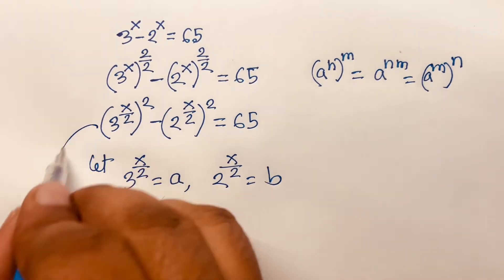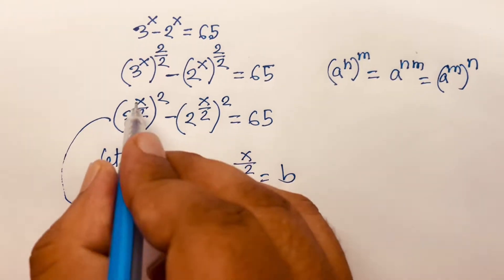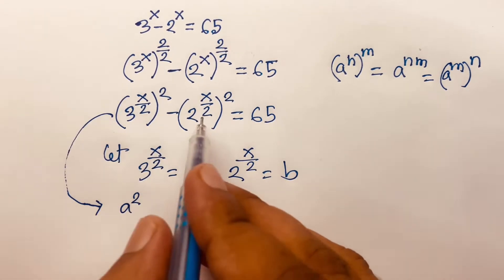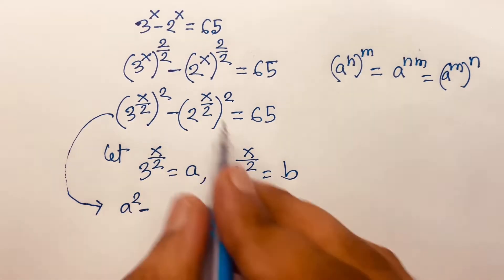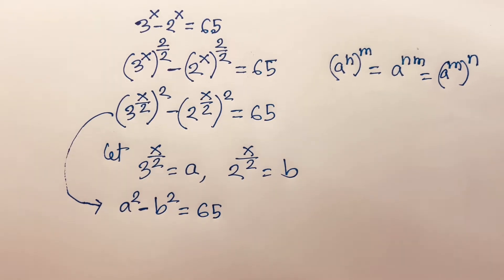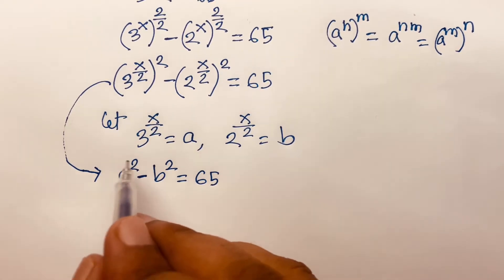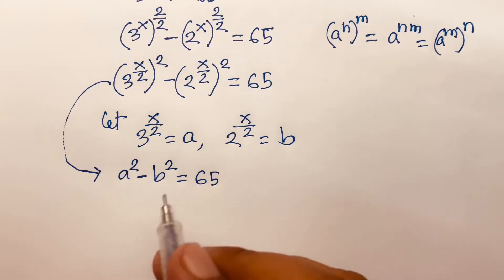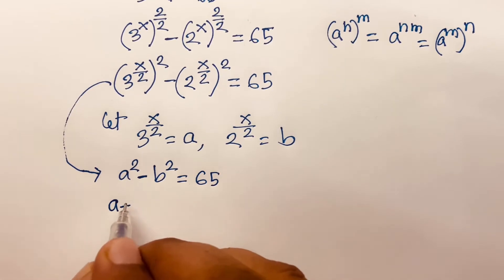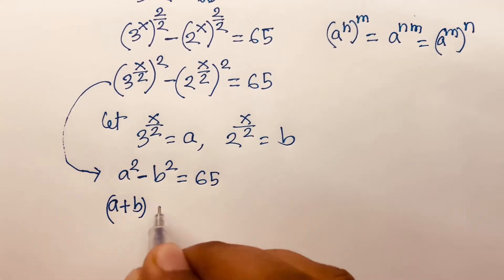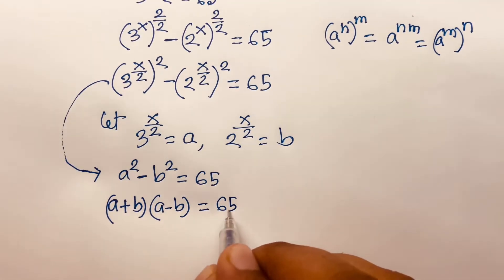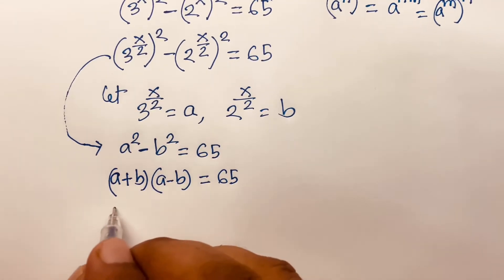This equation becomes a squared minus b squared equals 65. We know that a squared minus b squared equals (a + b)(a - b). According to this rule, I can write (a + b)(a - b) equals 65.